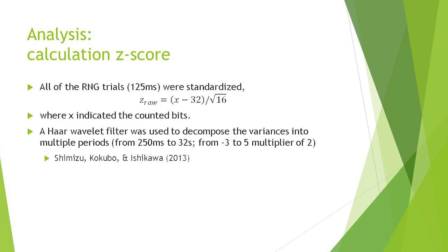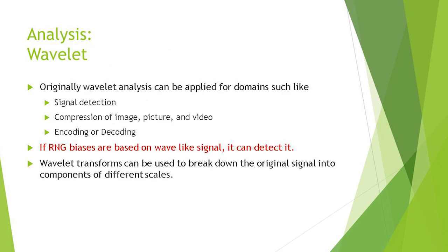And wavelet. A Haar wavelet filter was used to decompose the variances into multiple periods, from 250 milliseconds to 32 seconds. What is wavelet analysis in the current study? Originally, wavelet analysis can be applied for domains such as signal detection, compression of image, picture and video and so on. And this is just an encoding or decoding technique. If RNG biases are based on wave-like signal, it can detect it. Wavelet transforms can be used to break down the original signal into components of different scales.